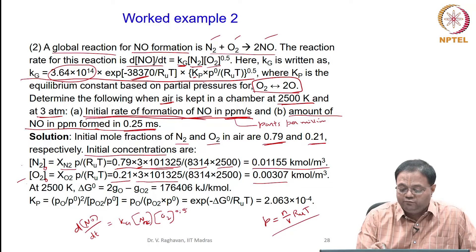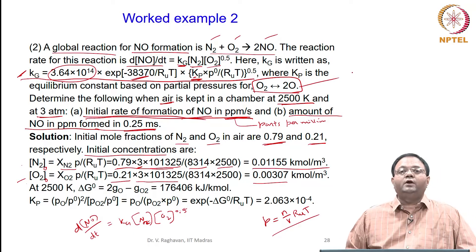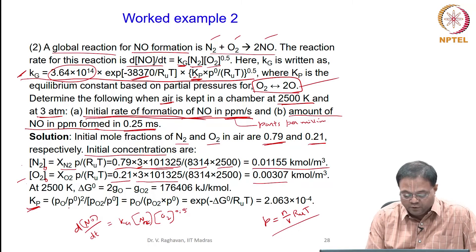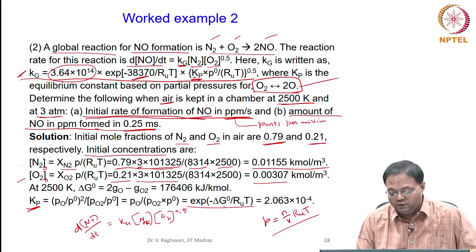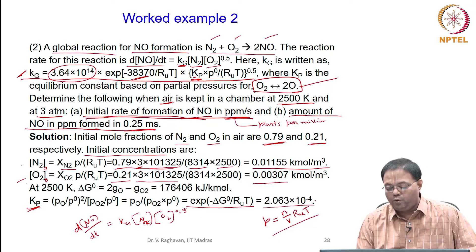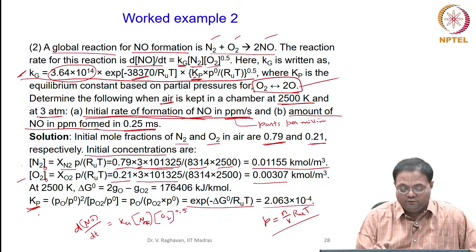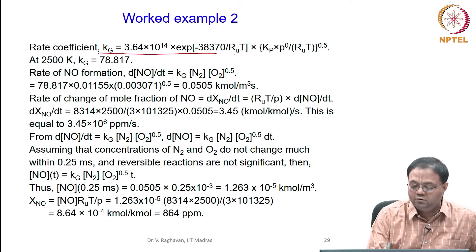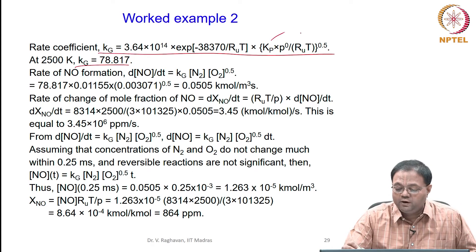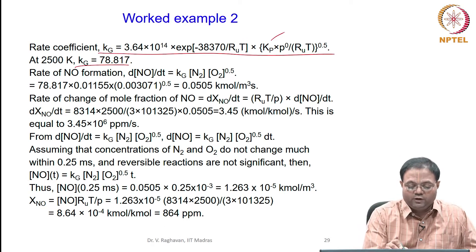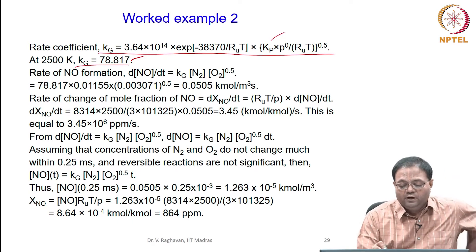To calculate Kg, we need the equilibrium constant Kp for the reaction O₂ ⇌ 2O. Kp equals (P_O / P_O₂) into P₀, calculated as the exponential of delta-G / RuT, giving Kp equals 2.063 × 10⁻⁴. With Kp and concentrations known, Kg is now calculated.